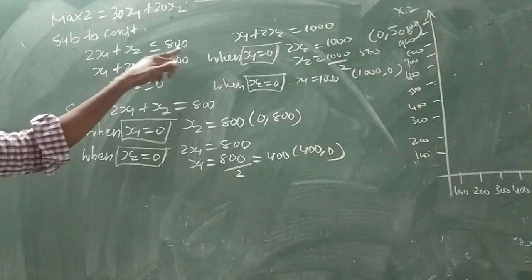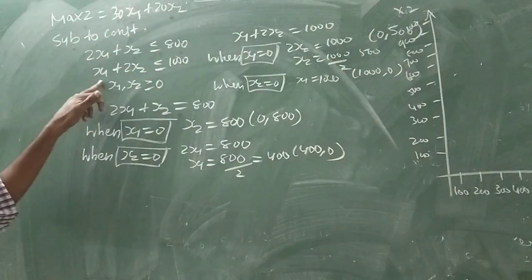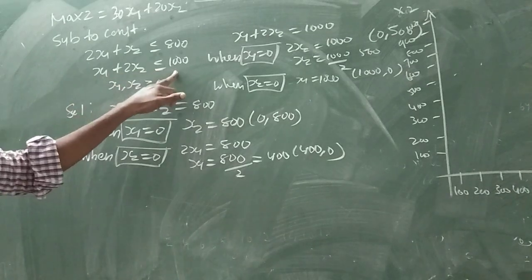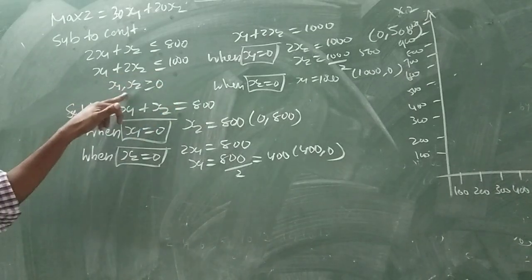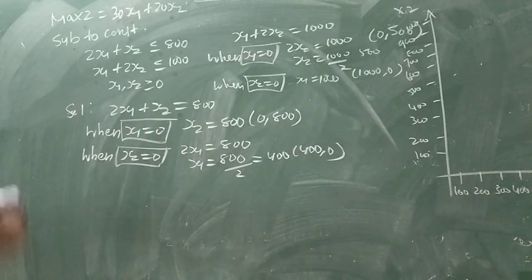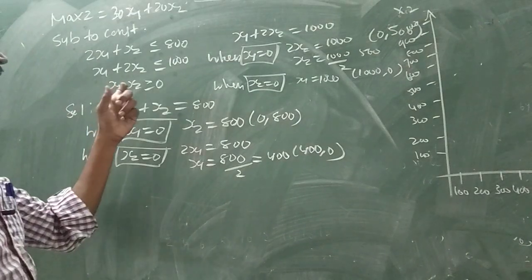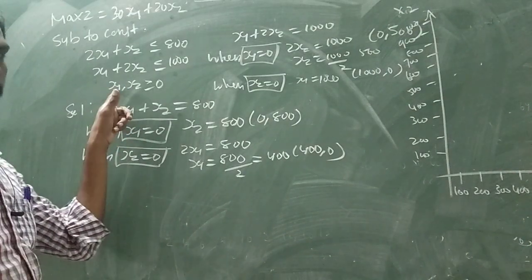2x1 plus x2 greater than or equal to 800. x1 plus 2x2 greater than or equal to 1000. x1, x2 greater than or equal to 0. This is the non-negativity constraint.